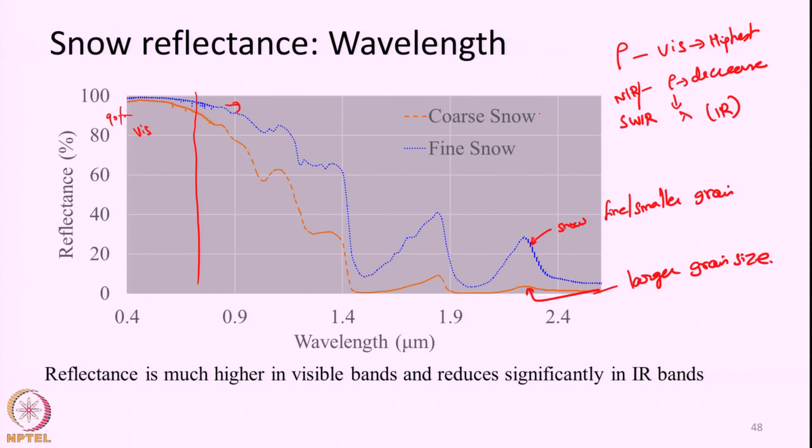The coarse-grained snow — larger-grained snow — will have still lower reflectance than snow composed of fine grains. Hence, how small the grain size is will determine the reflectance: finer the grain size, higher will be the reflectance; coarser the grain size or larger the grain size, lower will be the reflectance. This effect is more pronounced in the NIR and SWIR ranges.